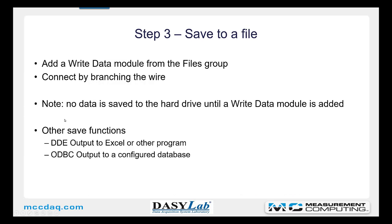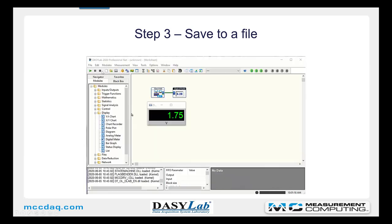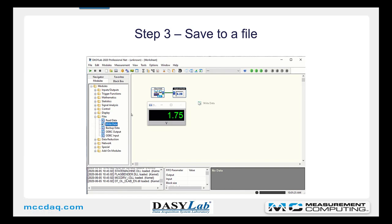Now we'll add a write data module from the files group. You'll connect it by branching the wire. Note that no data is saved to the hard drive until a write data module is added. There are other save functions including the DDE output to Excel or another program, and the ODBC database output to a configured database. You can select the one that works for your application. Close the display group, open the files group, add the write data module, and branch the wire to connect it.